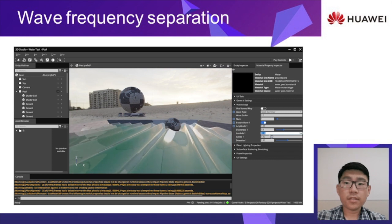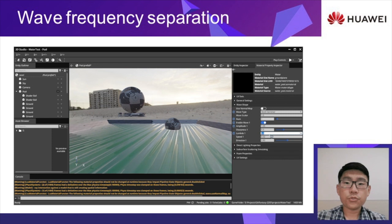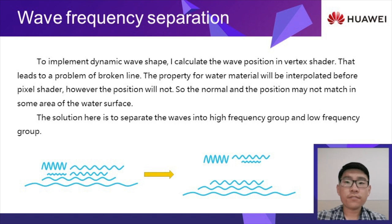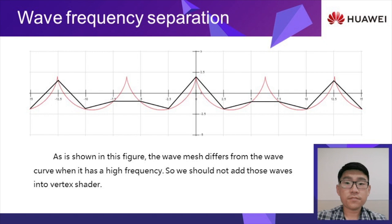In implementation, lambda, which means wavelength — its reciprocal is used to represent the frequency. It looks strange in a single wave but is quite helpful in combined waves. The dynamic wave is implemented using a vertex shader, so the actual shape in the render result is not a smooth surface. The normal and other properties can be interpolated and look continuous, but the shapes cannot. The higher the frequency of the wave, the more obvious the phenomenon is. So, as the figure shows, separate the base waves and only use those with low frequency to calculate the wave position. The wave mesh differs from the wave curve when it has a high frequency, so we should not add those waves into the vertex shader.